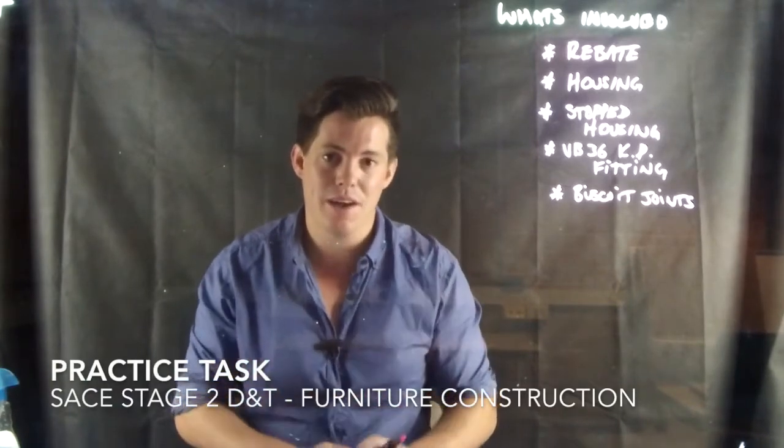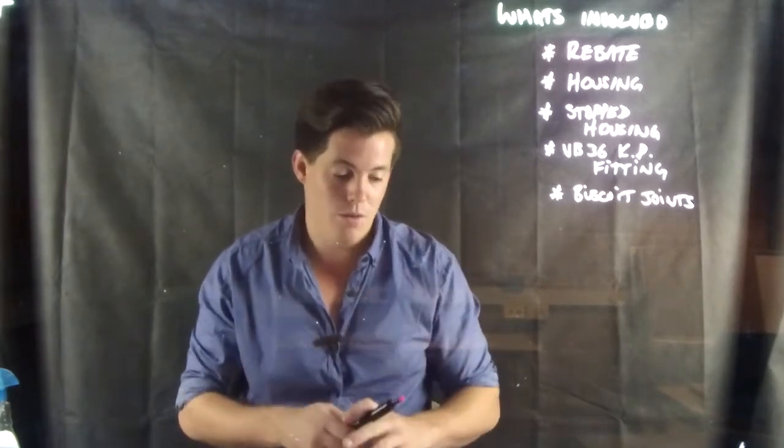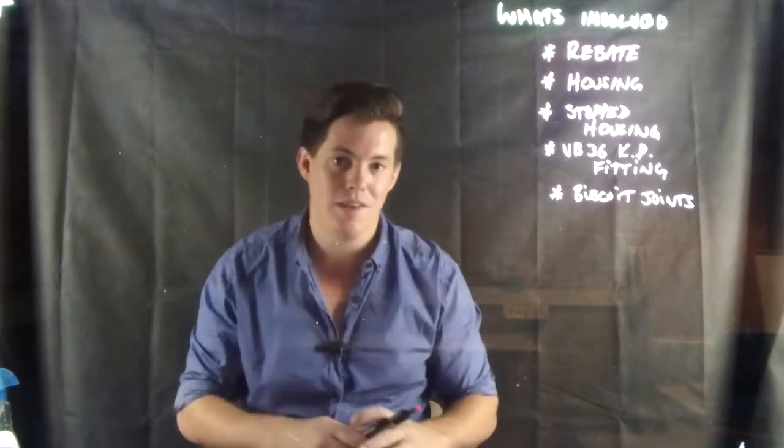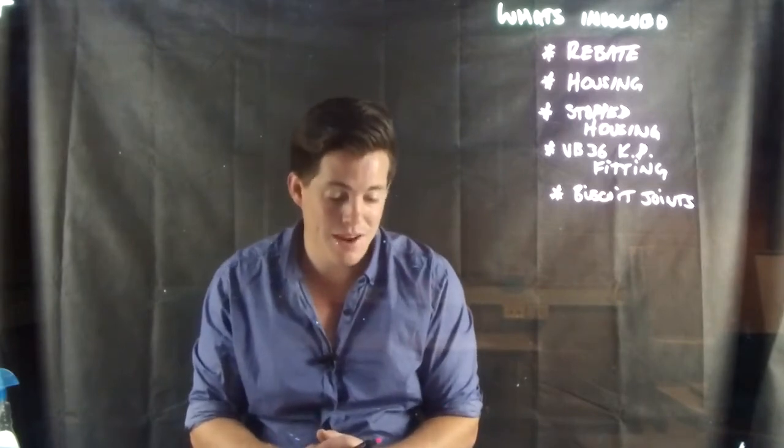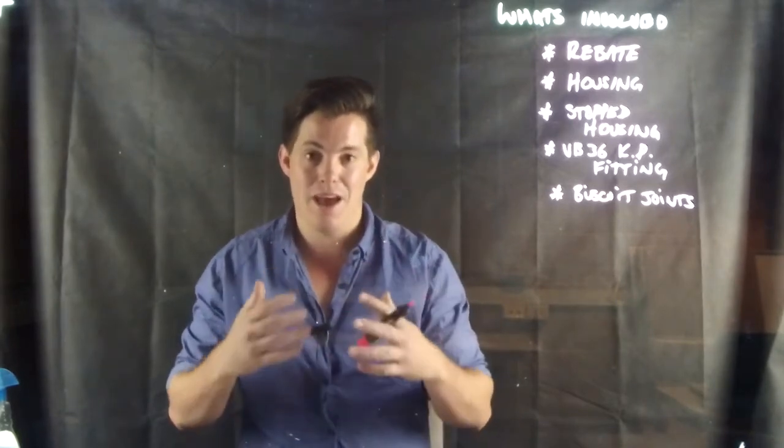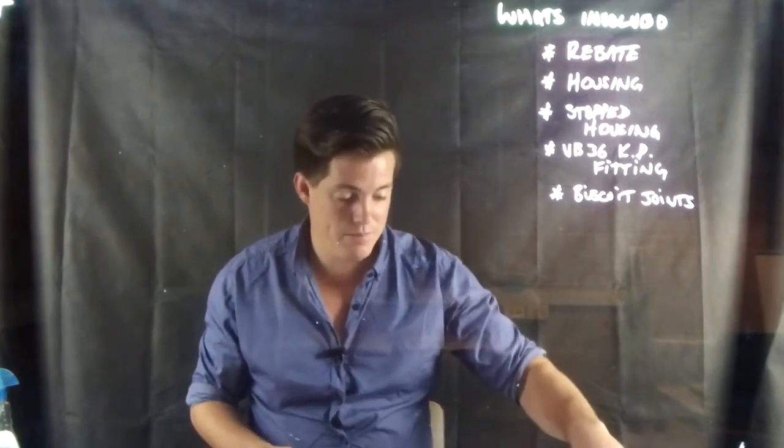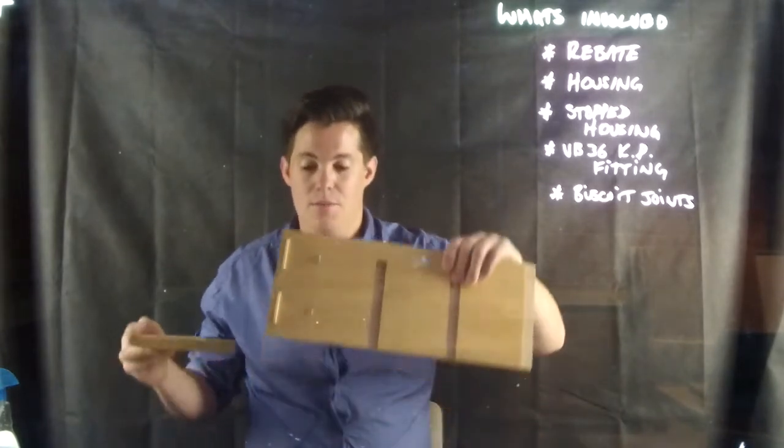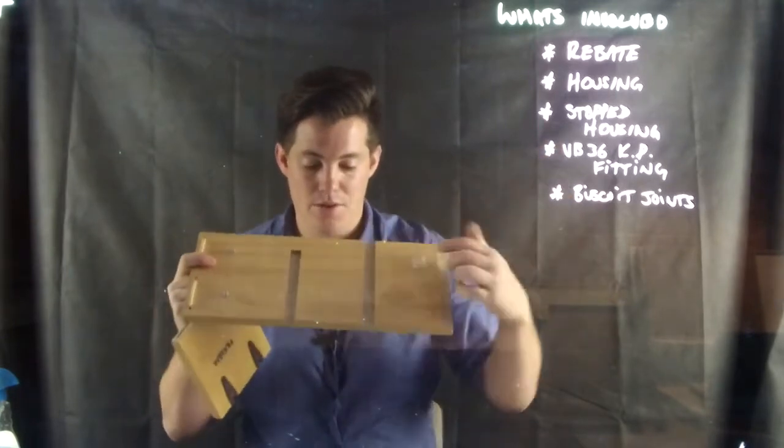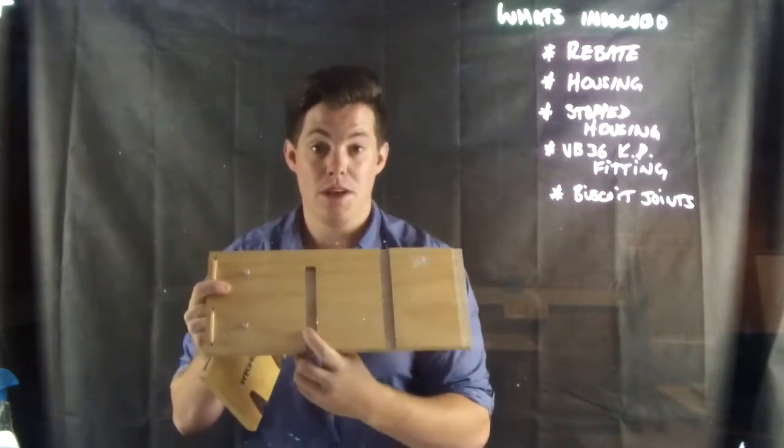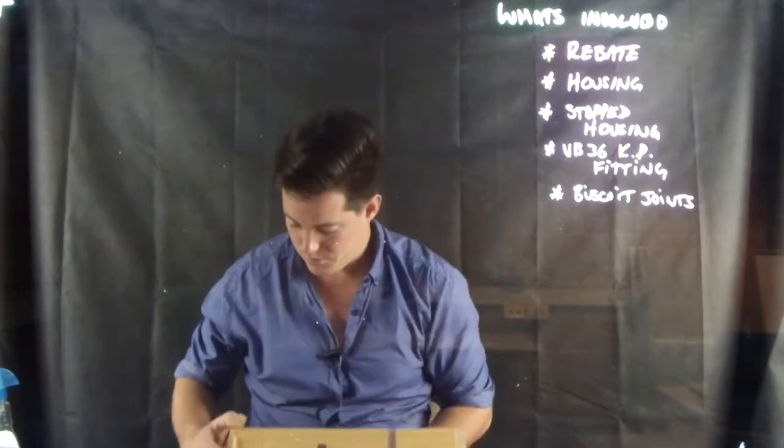The reasoning behind this practice task is that I want you to get yourself familiar with the processes of what we've done last year and some new processes that we'll introduce this year, so that when we get into our skills task, you're back and feel comfortable in the workshop environment. So what we're going to do is we're going to create a series of joints on some particle board. We're going to have a rebate joint, housing joint, a stopped housing joint, a VB-36 knockdown fitting joint, and a biscuit joint.